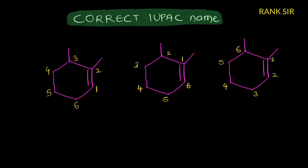Hello everyone. Today I want to explain one of the important IUPAC names of a given compound. This is the compound — the possible numberings are one, two, three, four, five, six. Generally, the multiple bond and substituent should get the lowest number. First preference: the multiple bond should get the lowest number, then give the lowest number to the substituent.